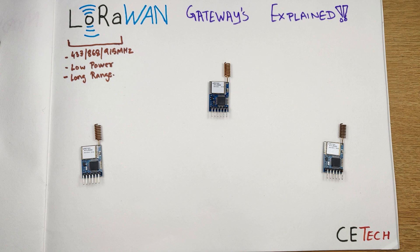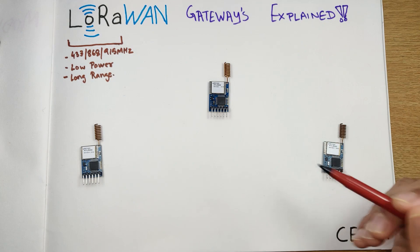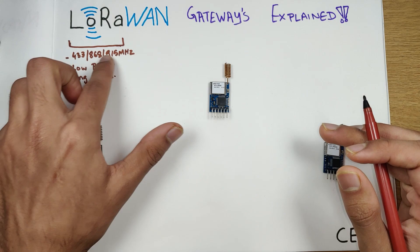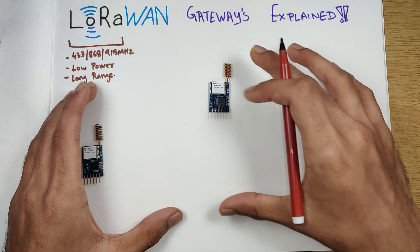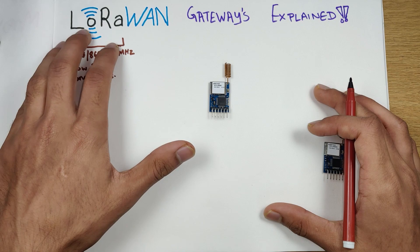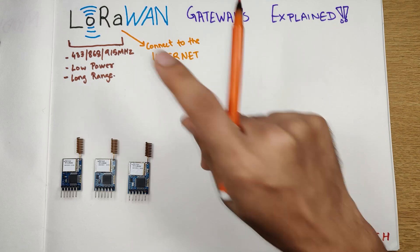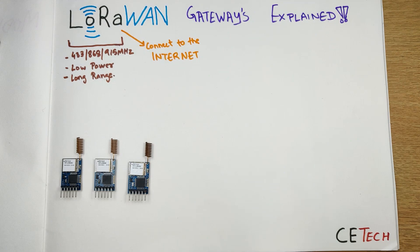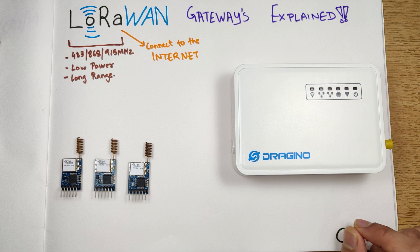All the modules we have here are transceivers, as they can transmit and receive LoRa information at the same time. Now, the information circulated within this network remains in the LoRa frequency band and the LoRa network. When we need to connect this LoRa network to any other network — like the internet — it becomes LoRaWAN, or LoRa-based Wide Area Network. So when you connect LoRa modules to the internet somehow and transfer the data to the internet, that becomes LoRaWAN.